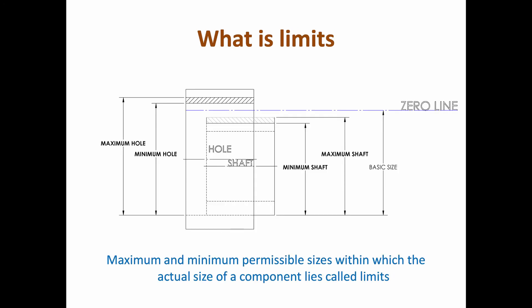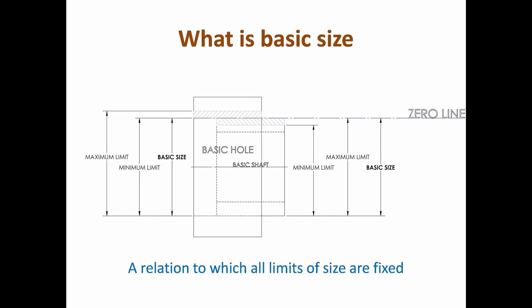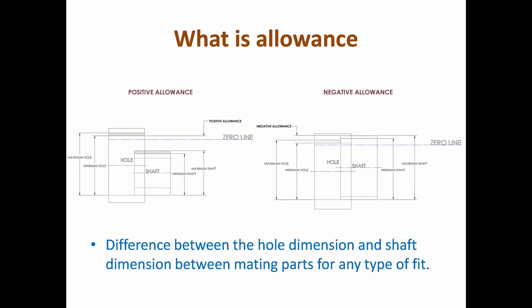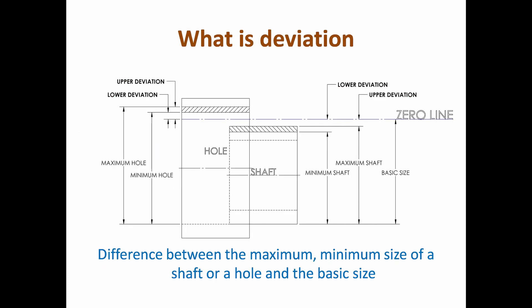What are limits? The maximum and minimum permissible sizes within which the actual size of a component lies are called limits. What is basic size? The basic size is the reference to which all limits of size are fixed. What is allowance? Allowance is the difference between the hole dimension and shaft dimension between mating parts for any type of fit. What is deviation? Deviation is the difference between the maximum or minimum size of a shaft or hole and the basic size.